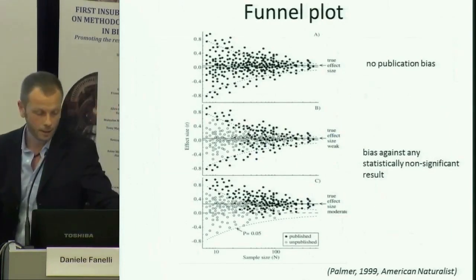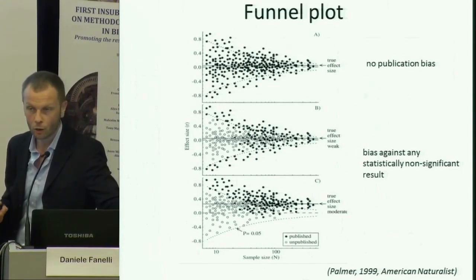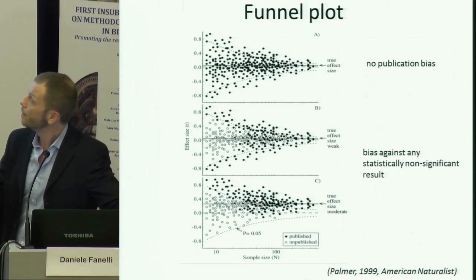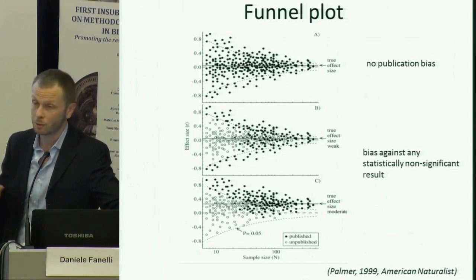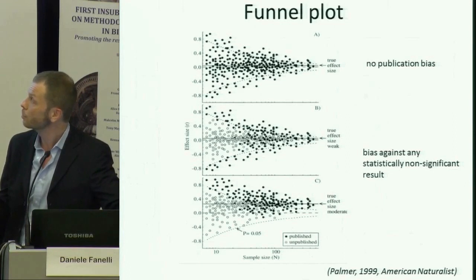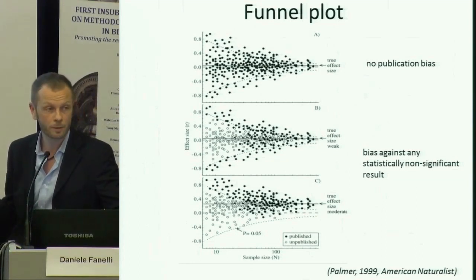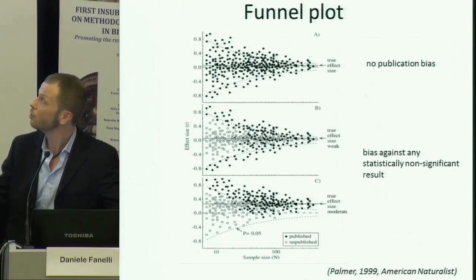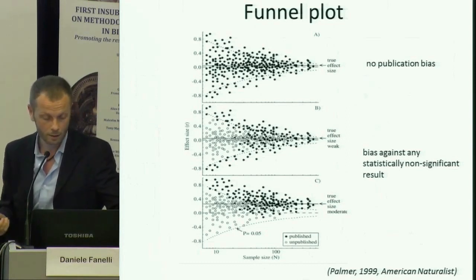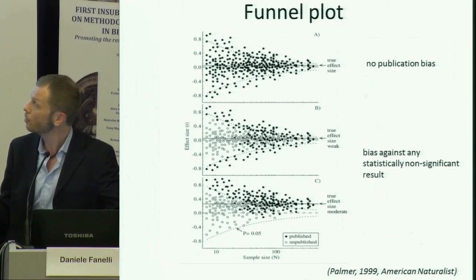This underlies the pretty clever idea of using funnel plots to try to infer if there is a problem of non-publication of non-statistically significant results. By definition, if you plot the size of effects reported by different studies around the same phenomenon against their precision — which in most cases is simply the sample size — what you expect to see is a triangular shape, where small studies are supposed to vibrate more around what is in theory the true effect.